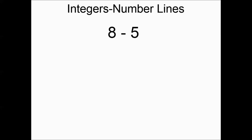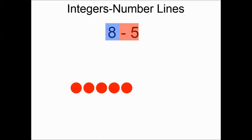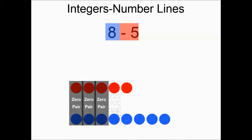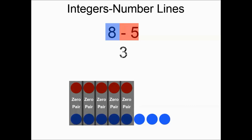Eight minus five: if you break it down, you have five negative chips and eight positive chips. You're going to have five zero pairs with three positives left over. And that is it — hope this helps.